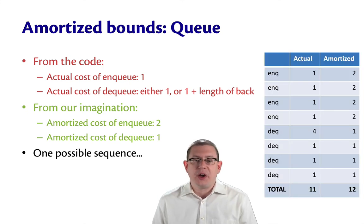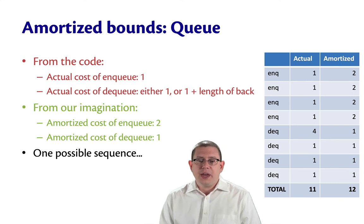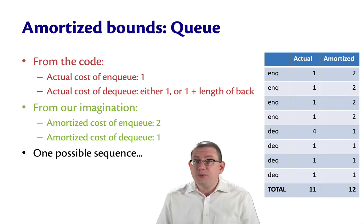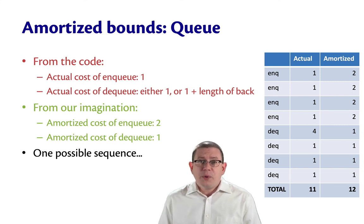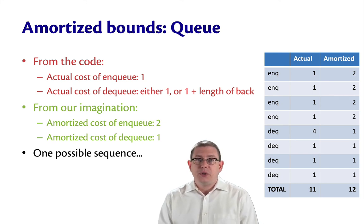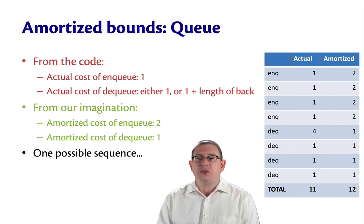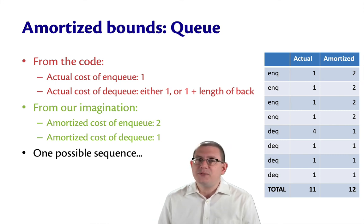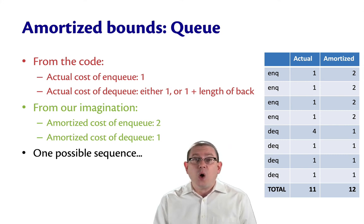That's hard to do for all sequences. Here's one sequence we could do it concretely for: suppose we did 4 enqueues followed by 4 dequeues. Each one of those enqueues actually costs 1, but we said its amortized cost would be 2. Each of the dequeues takes a different amount of time — the first dequeue takes 4 because of the reversal, and the rest only take 1. But we said the amortized cost of every single one of them was going to be 1. So if you add up all of those actual and amortized costs, the actual cost is less than or equal to the amortized cost — and that's what we want. But it's not enough to do it for one sequence; we need to do it for all possible sequences.